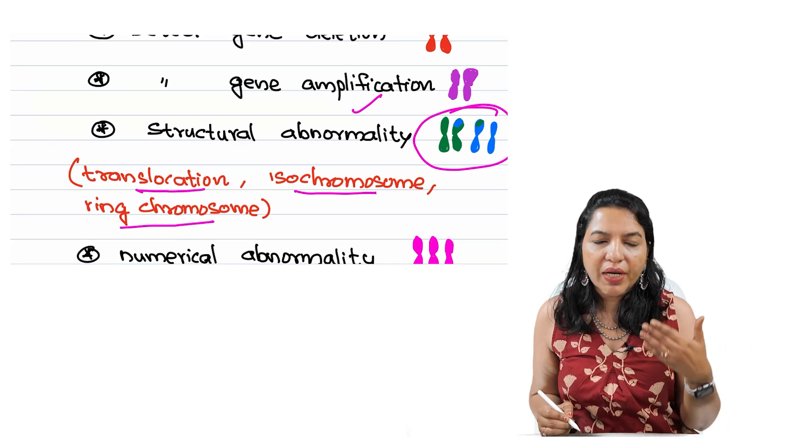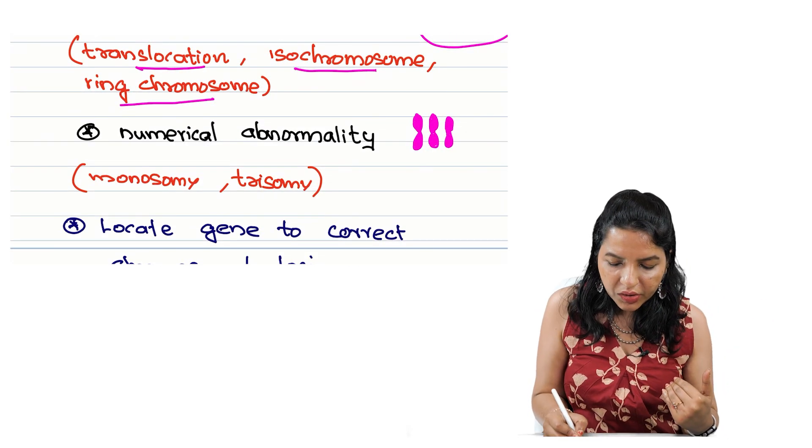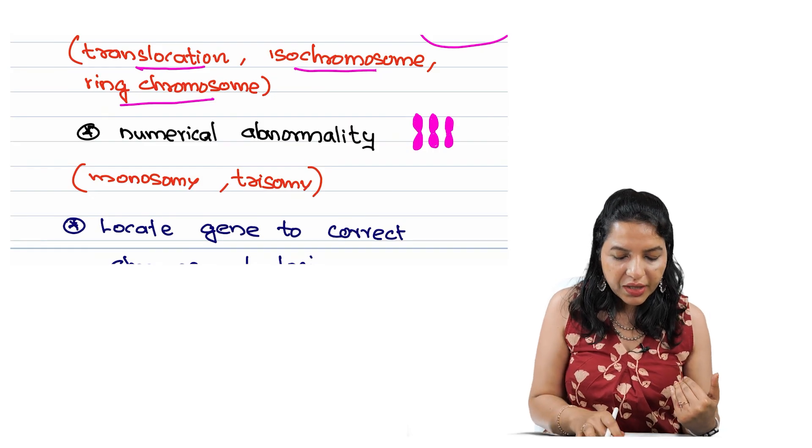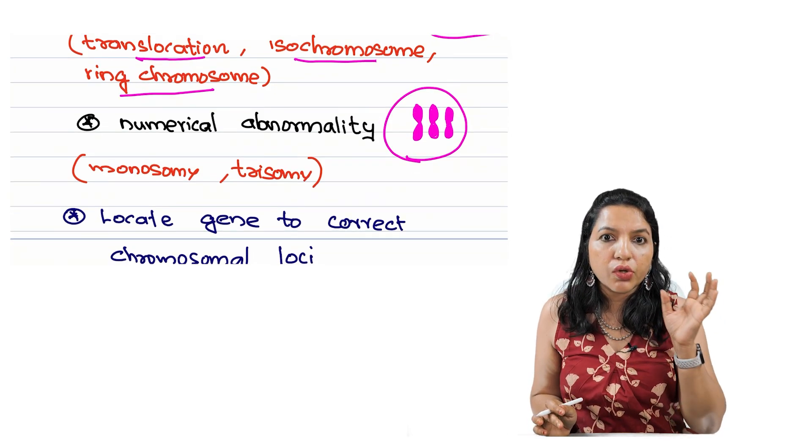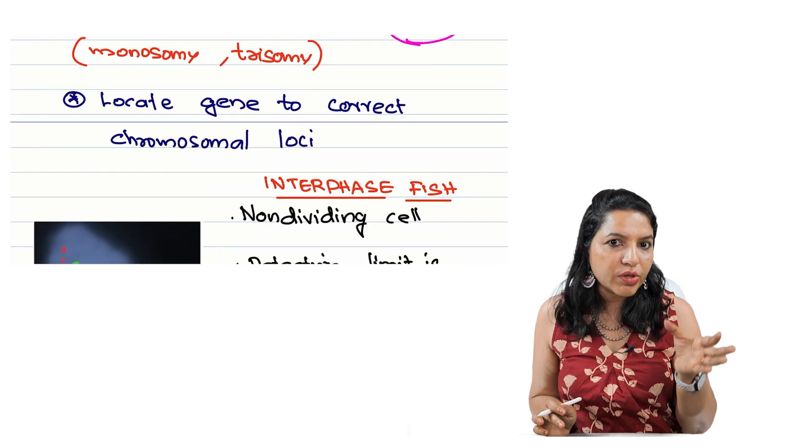Then numerical abnormalities like trisomy or monosomy. So this is a trisomy. Then another use of FISH is to locate the gene to the correct chromosomal locus.